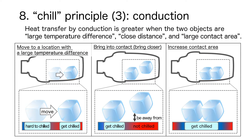Thermal conductivity does not change, but heat transfer by conduction can be improved through ingenuity. Heat transfer by conduction is greater when there is a large temperature difference, close distance, and large contact area. The key to chilling the shaker by conduction is to have the ice in wide contact with the inside of the shaker and, furthermore, to keep moving the ice to areas where it is not touching and where the temperature is higher, rather than keeping the ice in one place.